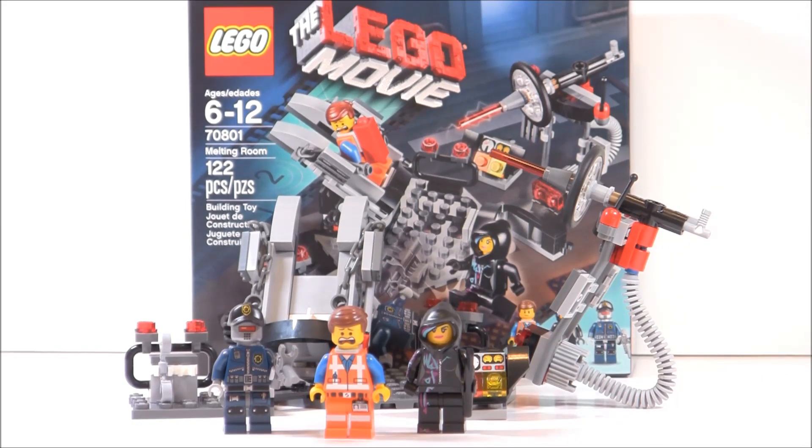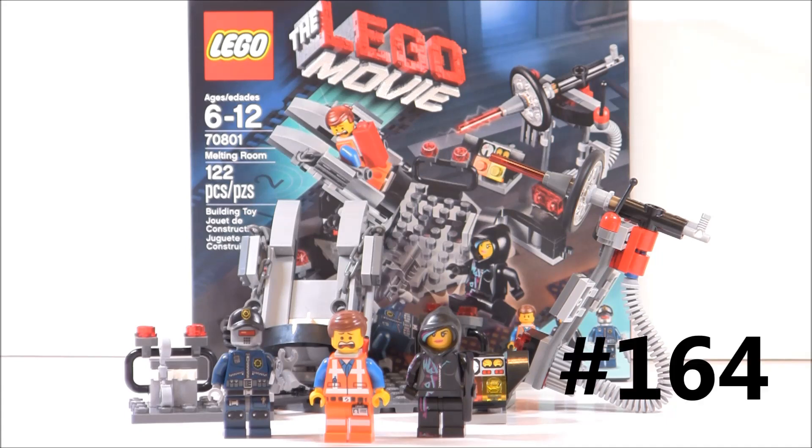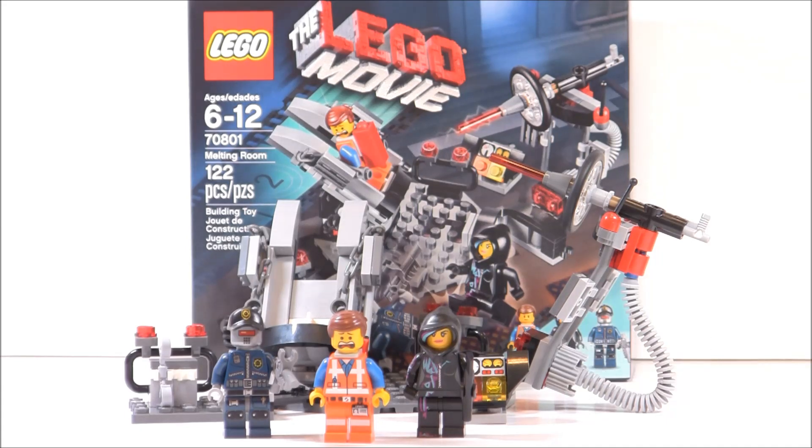Hello, Justin Euroworks here back for another review. Today I'm reviewing set number 70801, called The Melting Room. It has 122 pieces, three minifigures, and retails for $13 in the US. This is another Lego Movie set and these are just starting to show up in stores.